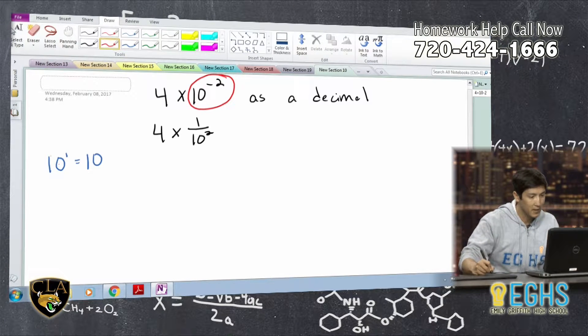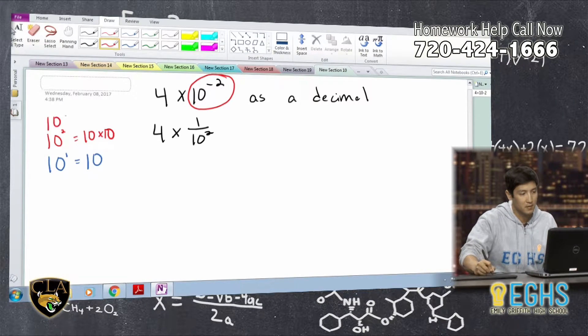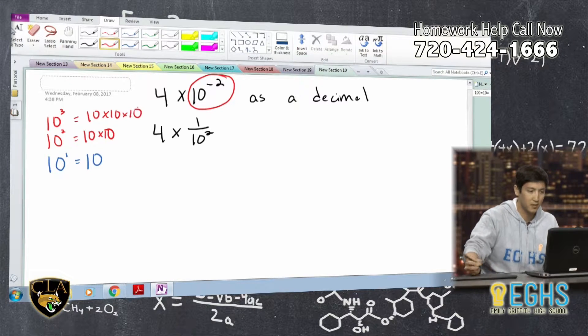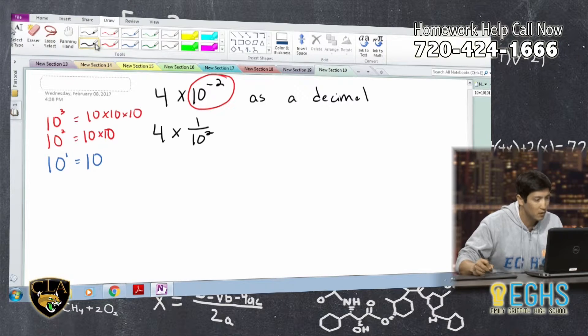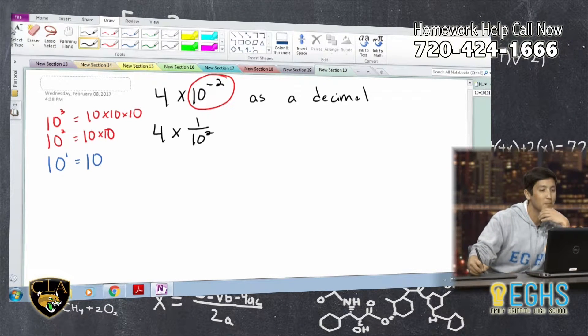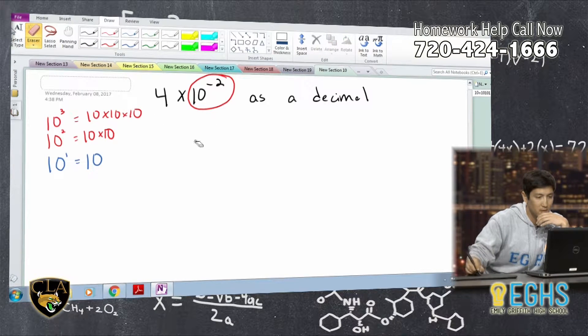But like Becca was saying, if we have 10 to the second power, well, that's 10 times 10. And if we have 10 to the third power, that is 10 times 10 times 10. We could do this forever, but, well, we can't because the show will be ending in like an hour or so. But let me move this stuff out of the way really quick so we can see how this looks.